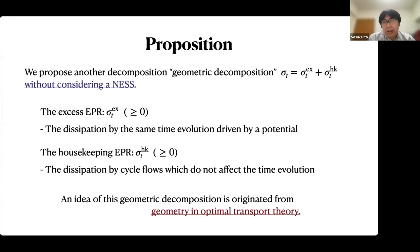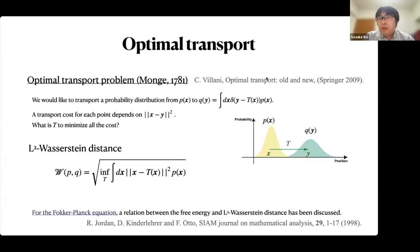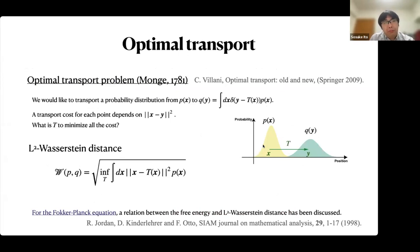The housekeeping entropy production rate means dissipation by a cycle flow which does not affect the time evolution. This idea of decomposition is originated from the geometry in optimal transport theory. The optimal transport problem is: we would like to transport a probability distribution from p to q using a map T, and the transport cost for each point depends on the distance between x and y. What is the map T that minimizes the total cost?